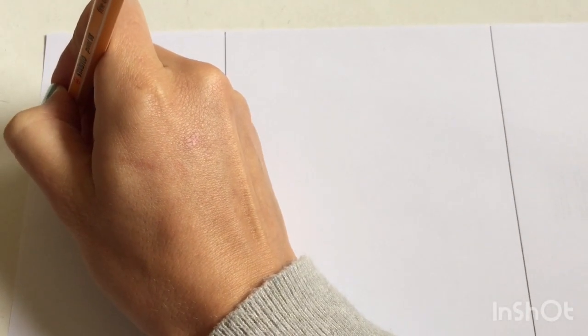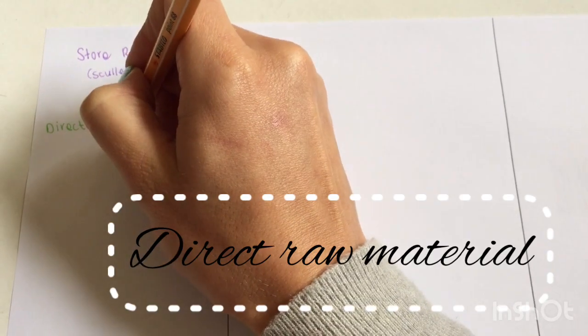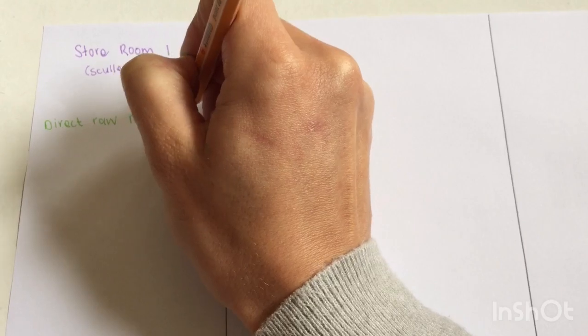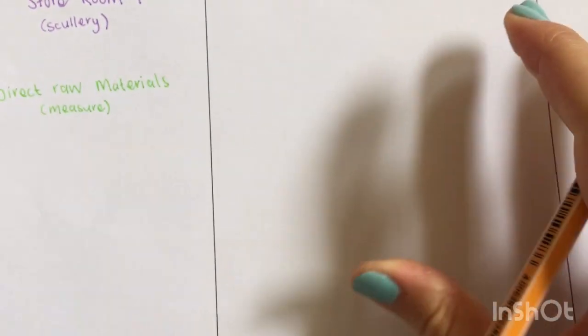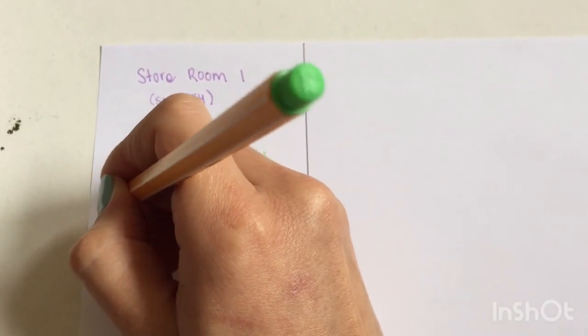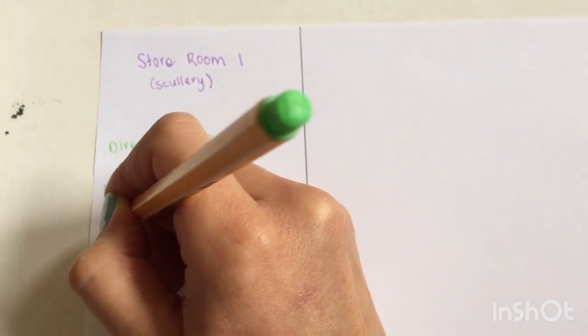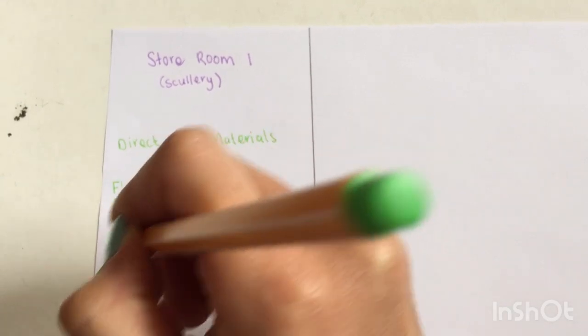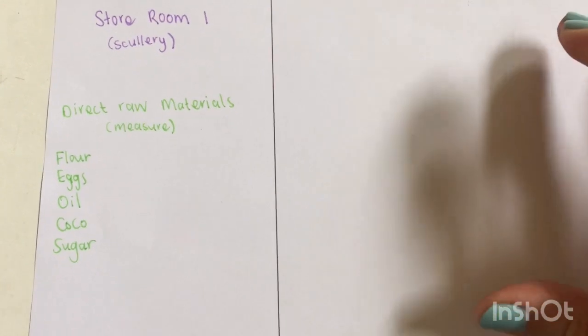The first category you need to understand is direct raw materials. Direct raw materials are all the ingredients that I can measure specifically when I bake my cakes. That will be things like flour, eggs, oil, cocoa, and sugar. I'm going to measure it exactly and use the exact measurements when I bake my cake.